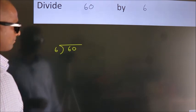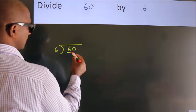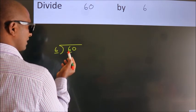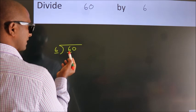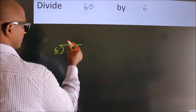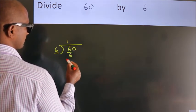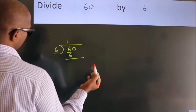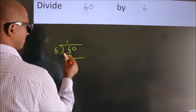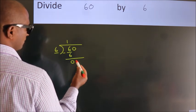Next, here we have 6, here 6. When do we get 6? In the 6 table. 6 ones are 6. Now we should subtract. We get 0.